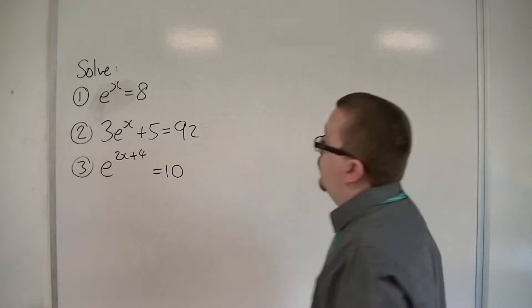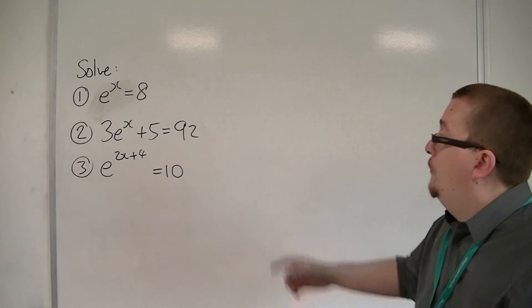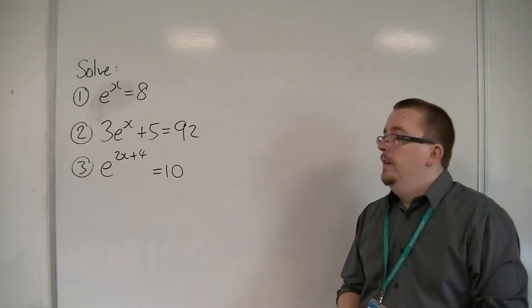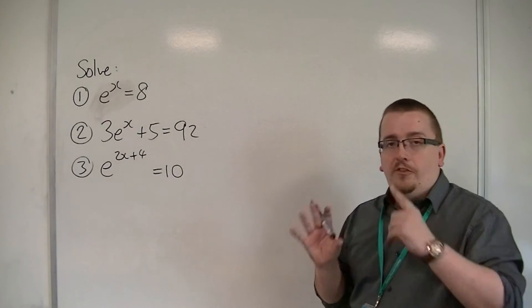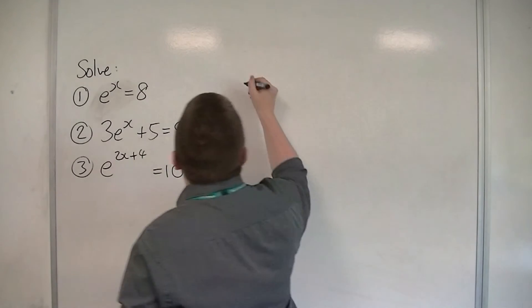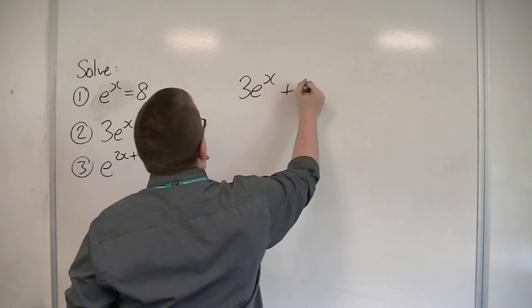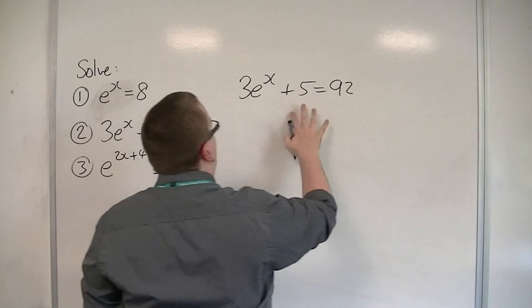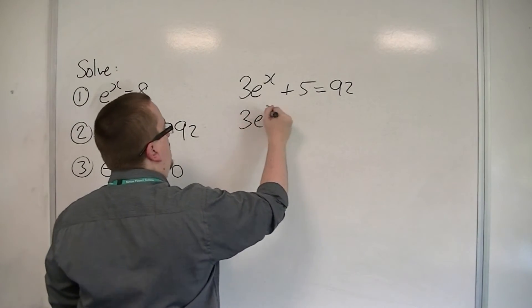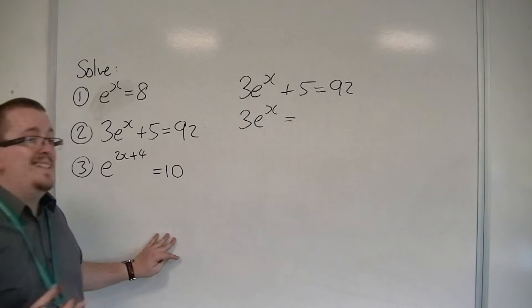So let's look at the next one. We have 3e to the x plus 5 is equal to 92. So first things first, we're going to subtract the 5. Subtract the 5 from both sides. So we're going to have 87.